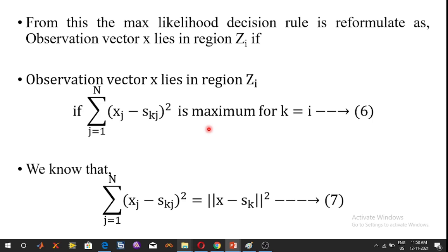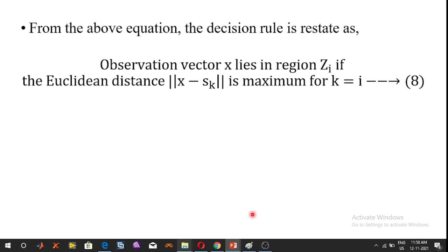We know that sigma j=1 to N of (Xj minus SKj)² equals the squared magnitude ||X minus SK||². From this, the decision rule is restated as: observation vector X lies in region Zi if the Euclidean distance ||X minus SK|| is minimum for K = I.